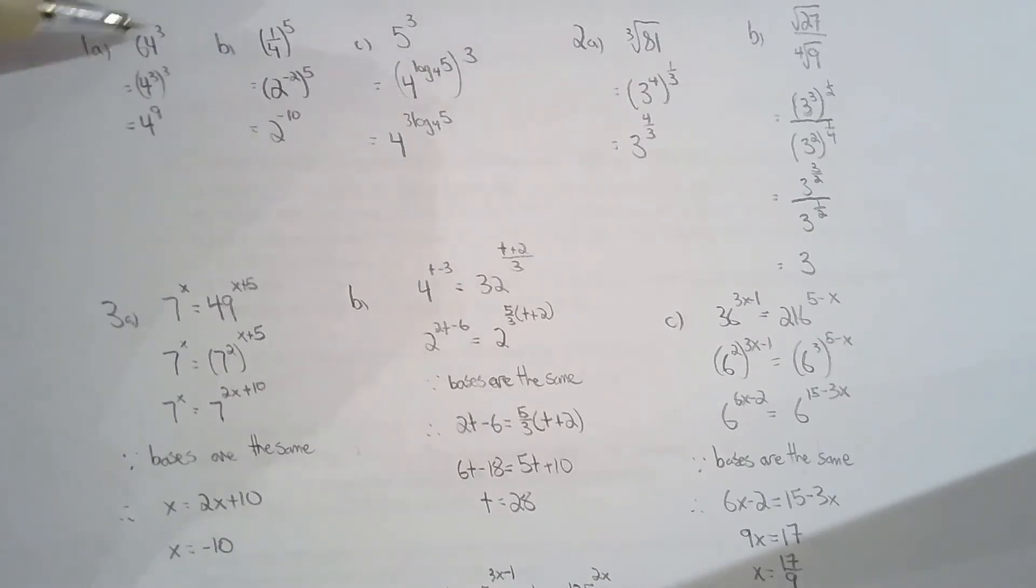So 64 cubed, we want to write it as a power with a base of 4 instead of 64. As long as you know that 64 is 4 cubed, then you can easily do this question. Now if you didn't know that 4 cubed is 64, what you have to do is just play with powers of 4 until you get to 64. But you should really know 4 cubed is 64.